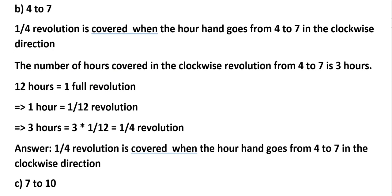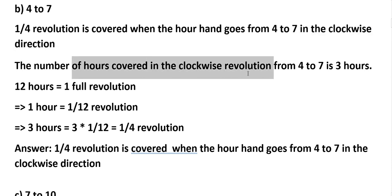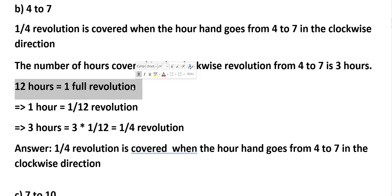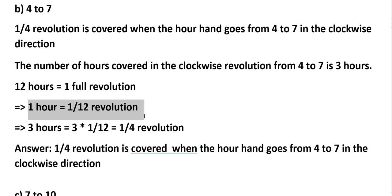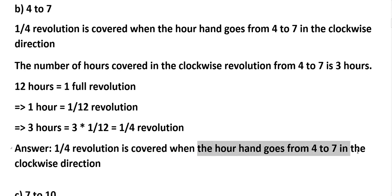B: 4 to 7. One-fourth revolution is covered when the hour hand goes from 4 to 7 in the clockwise direction. The number of hours covered in the revolution from 4 to 7 is 3 hours. So 12 hours equals 1 full revolution, 1 hour equals 1/12 revolution, therefore 3 hours equals 3 × 1/12, that is 1/4 revolution. Answer: 1/4 revolution when the hour hand goes from 4 to 7 clockwise.